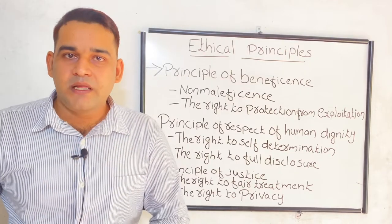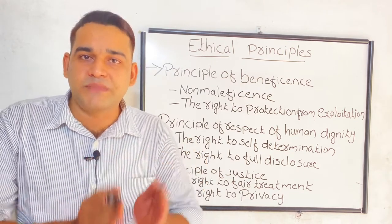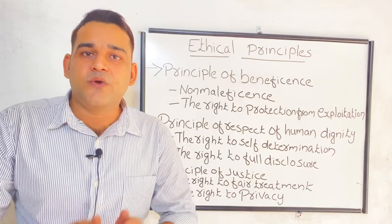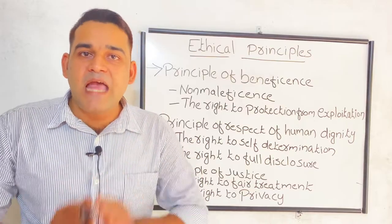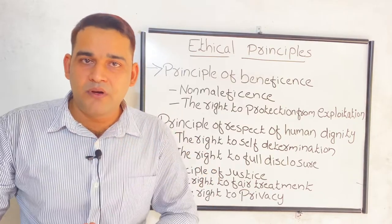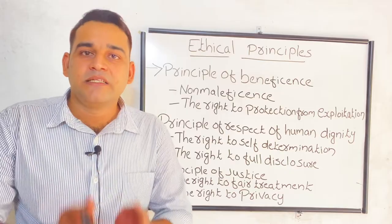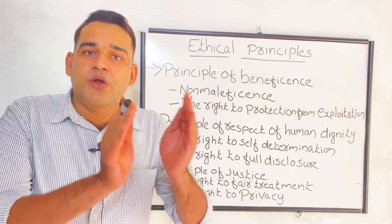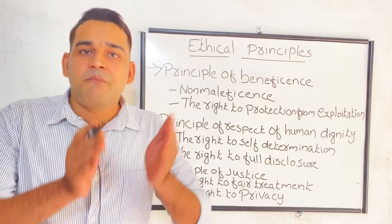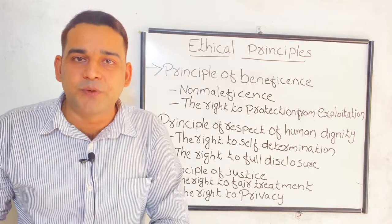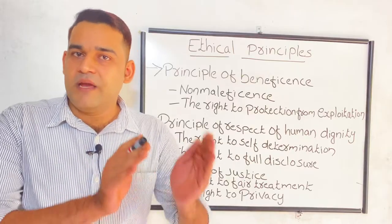According to the principle of beneficence, the participant — that is the person participating in your research, your subject — should get the maximum benefit and minimum or no harm. Those participating in the research should get maximum benefit and only minimum or no harm or side effects. The benefit should be maximum and the harm or side effect should be very less. That is the first principle: principle of beneficence.